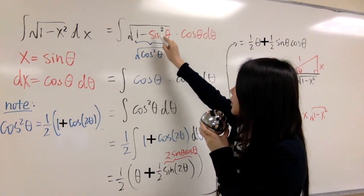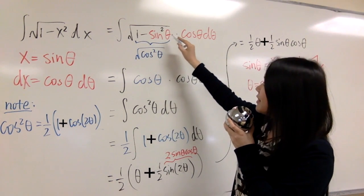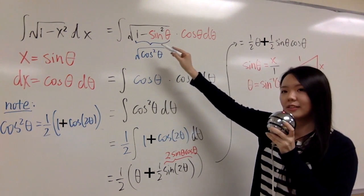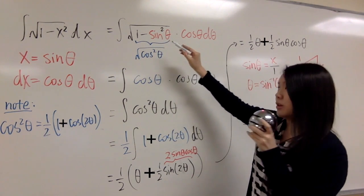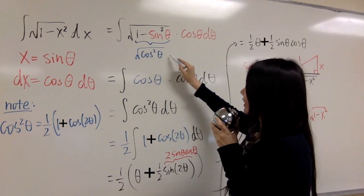And 1 minus x squared, which is 1 minus sine squared theta, and we have cosine squared theta plus sine squared theta equals to 1, so 1 minus sine squared theta equals to cosine squared theta.